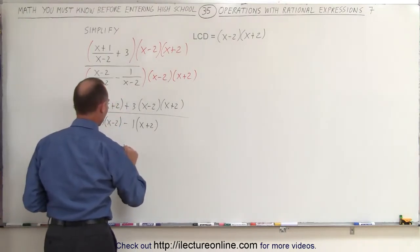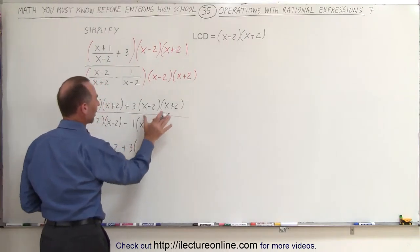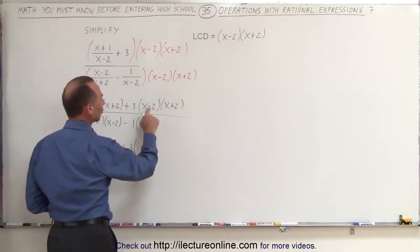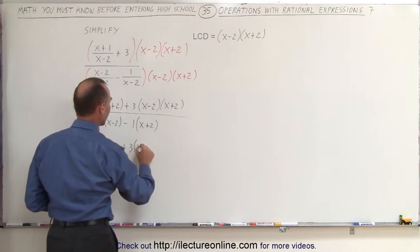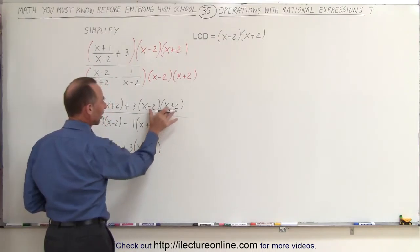Plus 3 times, we'll do it in two steps, multiply these together. Notice when this is a minus and this is a plus, you'll end up with x squared minus 4. The difference of squares when factored gives you this.